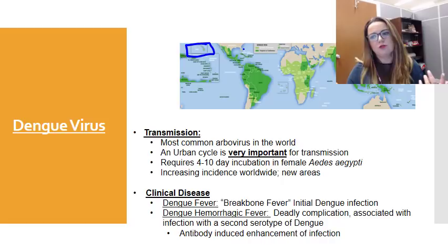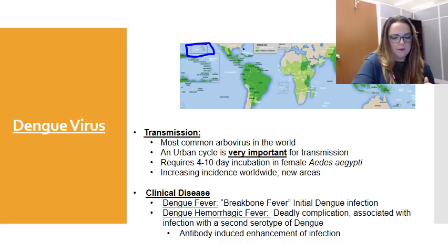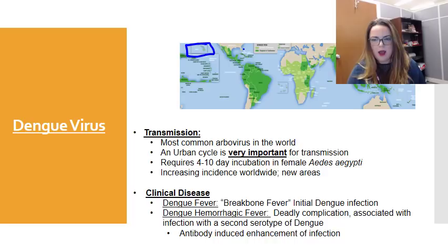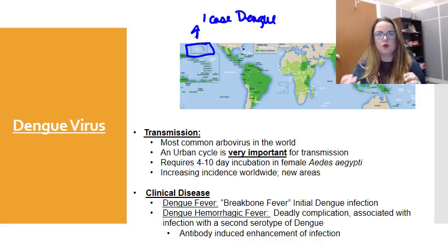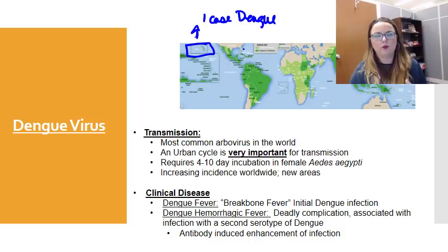Local transmission has even been reported in uncommon places like France and Croatia. There was an outbreak in Portugal that led to over 2,000 cases. Hawaii had one case in 2015 and the local tourism board went into a panic — fortunately, mosquito control resolved it. Last year there were two locally transmitted cases of dengue, one in Florida and one in Alabama. So we are seeing it here.